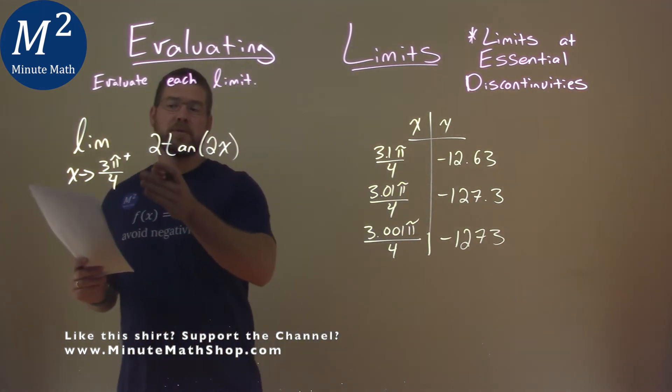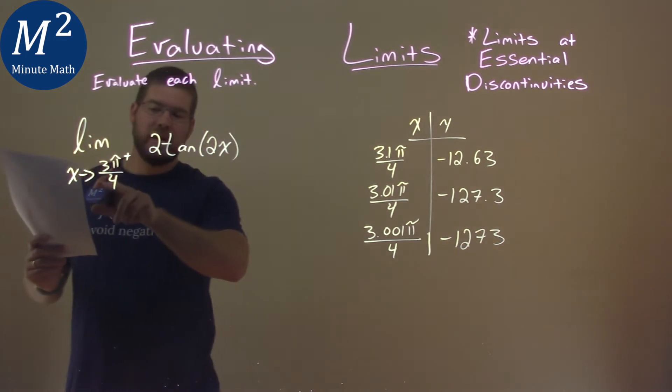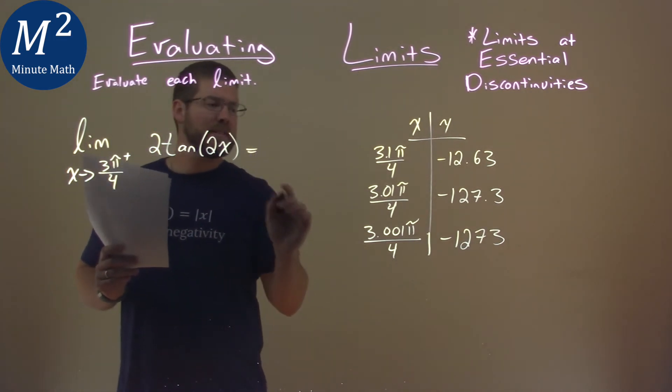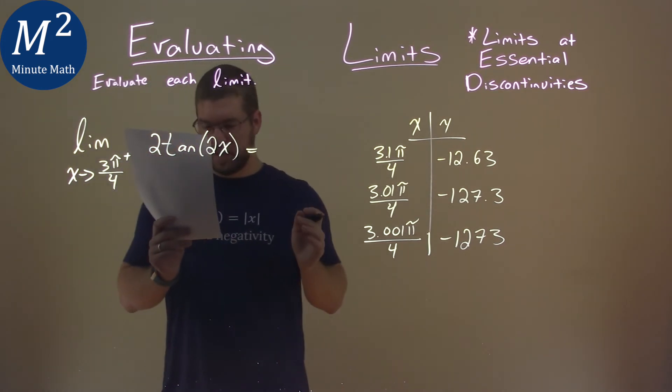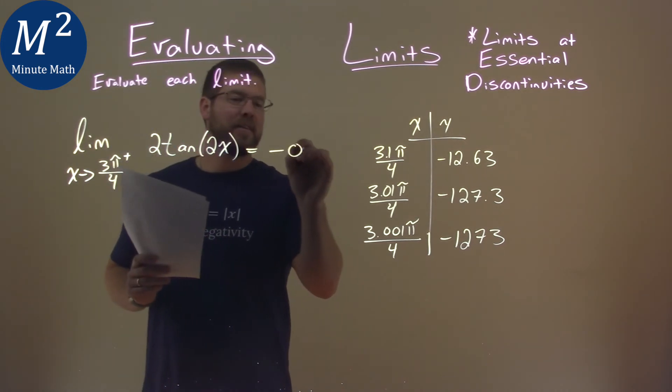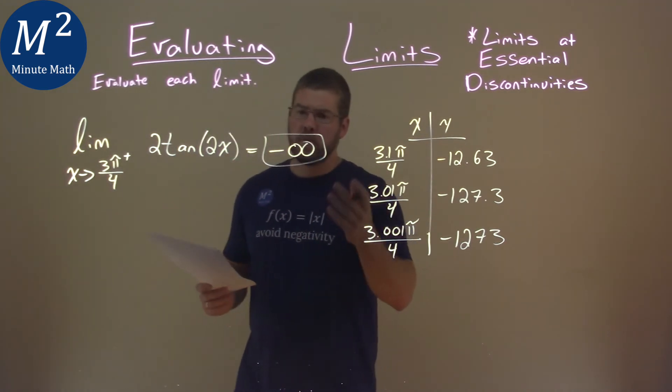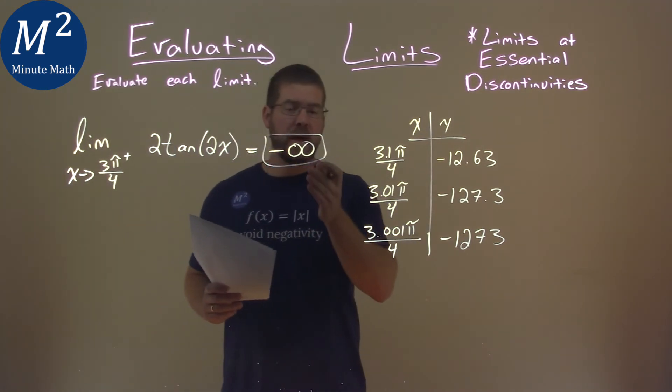So what happens as we approach this function as x approaches 3π/4 from the right-hand side? Well, we can see that this limit is approaching negative infinity using our table here. So our final answer for this limit is negative infinity.